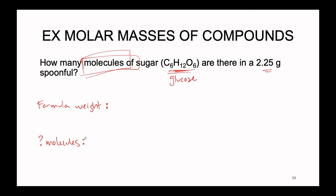Let's figure out the formula weight of sugar and how many molecules are in a single spoonful. Using the chemical formula C₆H₁₂O₆ — we have six carbons, 12 hydrogens, and six oxygens. The subscript that follows the element corresponds to how many of that element are present inside the chemical formula. We need to find the atomic molar masses of carbon, hydrogen, and oxygen on the periodic table to find the formula weight for sugar.